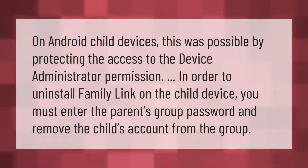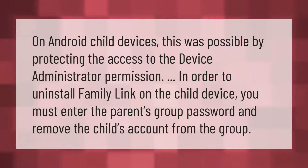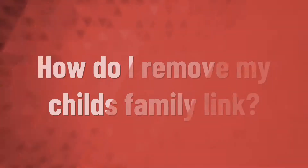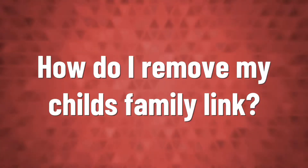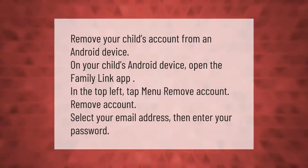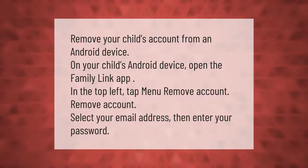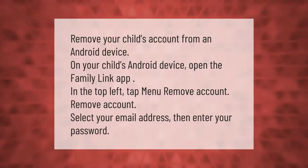On Android child devices, you can protect access to the device administrator permission. To uninstall Family Link on the child device, you must enter the parent's group password and remove the child's account from the group. On your child's Android device, open the Family Link app. In the top left, tap Menu, then Remove Account, select your email address, and enter your password.